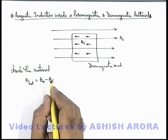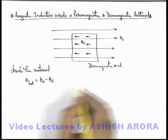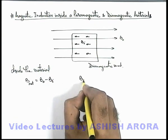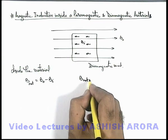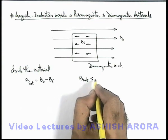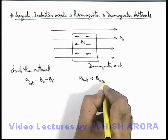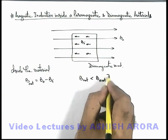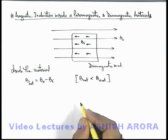As the induced field is in opposition to the external field, we can write that the net field inside the diamagnetic material will have a magnitude less than the external field B₀.